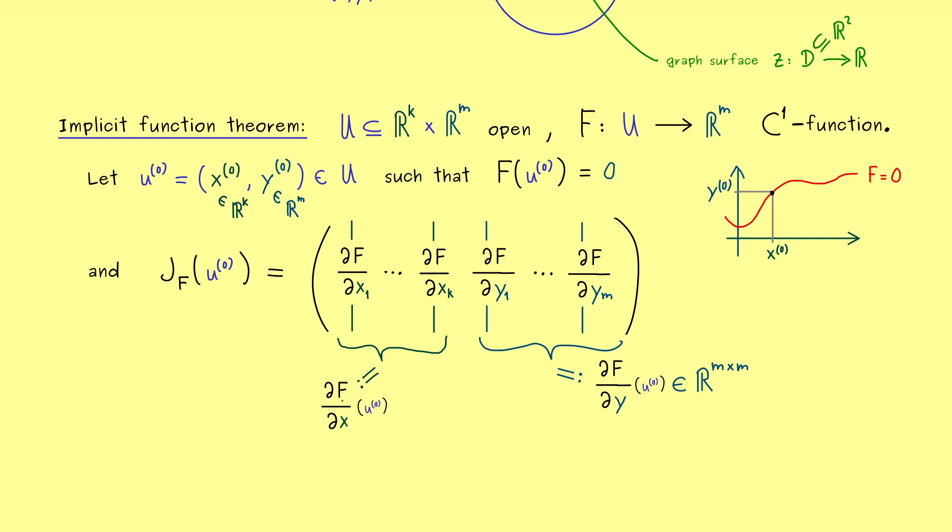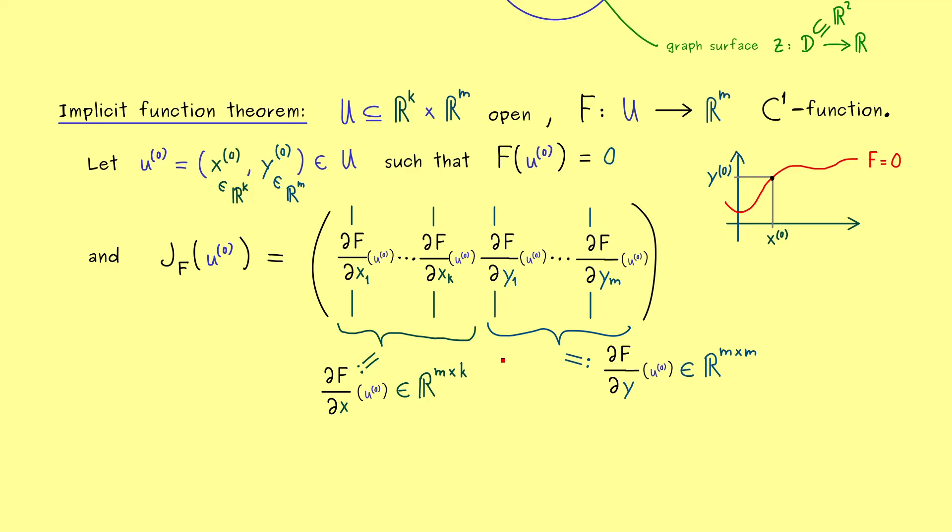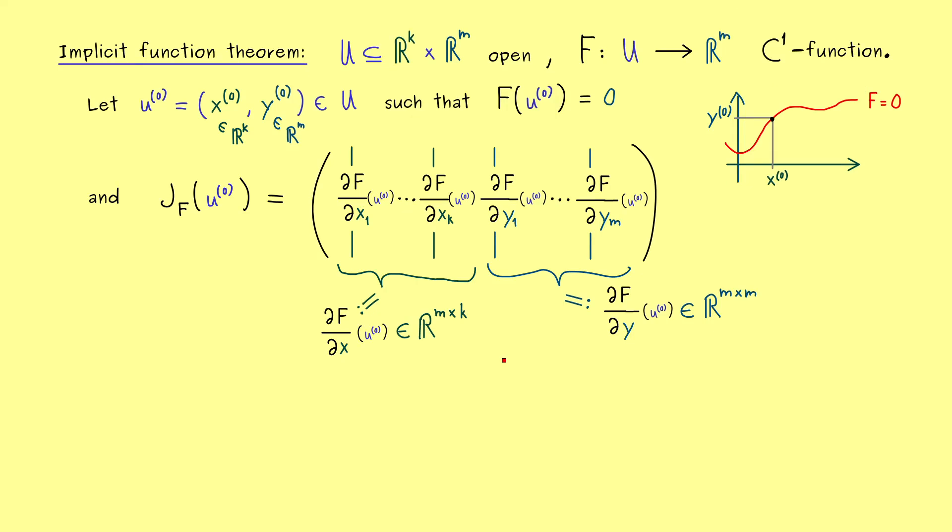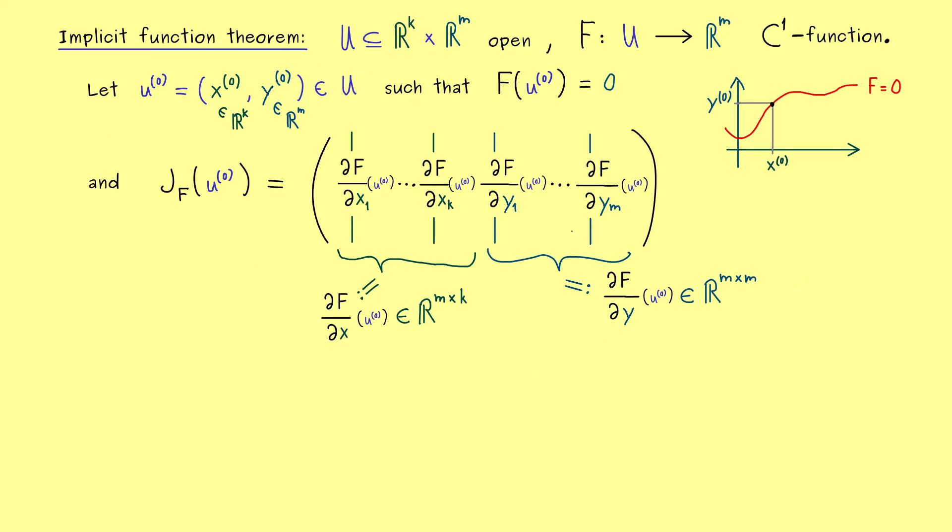Now we can formulate our implicit function theorem. So maybe first recall, what we actually want can be visualized in this picture. Locally, around our point here, we want to have a graph of a function. So this is a nice graph, but please recall, we just have a contour line, so it definitely could look like this as well. Which implies, at such a point here, we would not find a local graph. It's easy to see, because it goes back and forth, this cannot be a graph of a function, where x is the variable and y is the value.